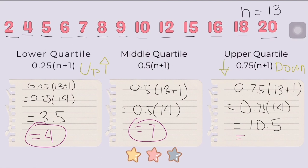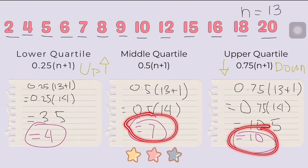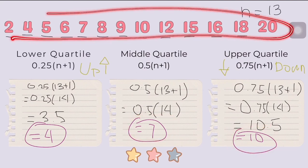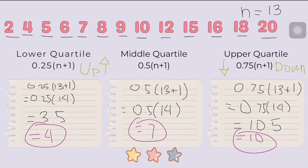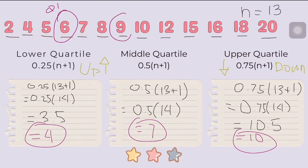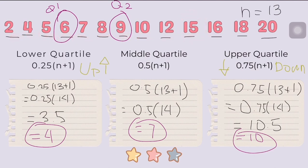Now that we have positions 4, 7, and 10, we can determine the actual quartile values. Counting to the 4th number gives Q1. Counting to the 7th number gives Q2, or the median. Counting to the 10th number gives Q3, or the upper quartile.